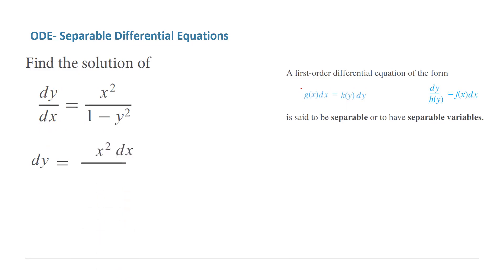dy can be written as x squared dx divided by 1 minus y squared. What we did, we just basically multiplied both sides by dx or we can say we did the cross multiplication. Now we can take 1 minus y squared and multiply it by dy on the other side we left with x squared dx. So another algebra step for you is taking 1 minus y squared and then do the cross multiplication.